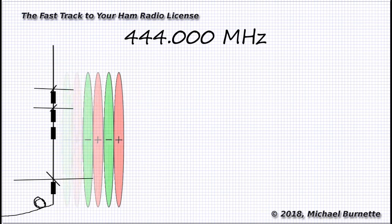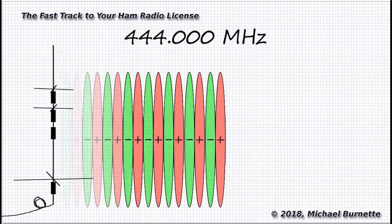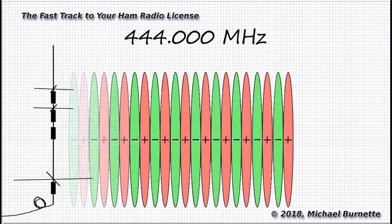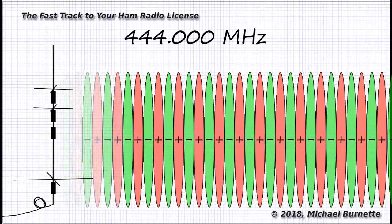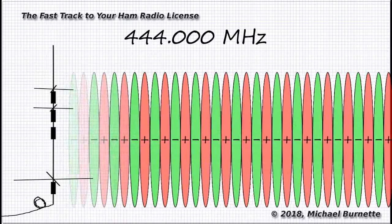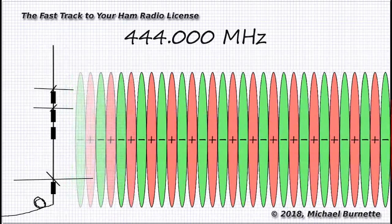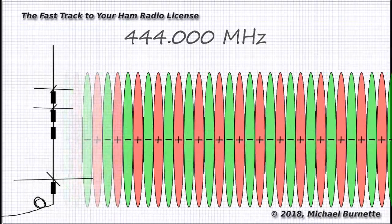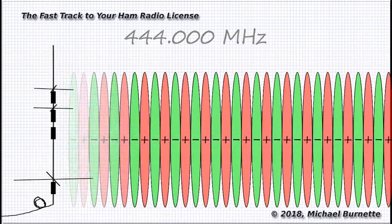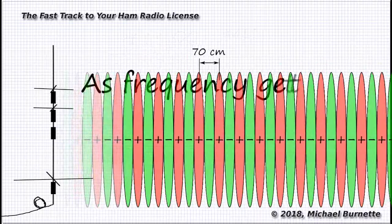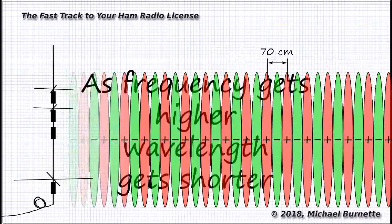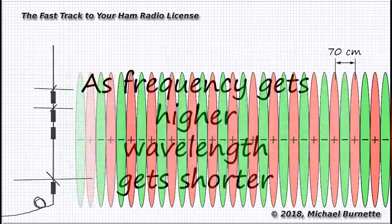now there are three times as many waves coming out of the antenna in the same amount of time. They're still traveling at exactly the same speed as that 2-meter signal, but now the distance between the positive peaks, this signal's wavelength, is one-third as long. You can see that as frequency gets higher, the wavelength gets shorter.